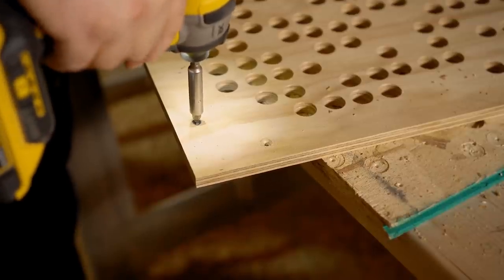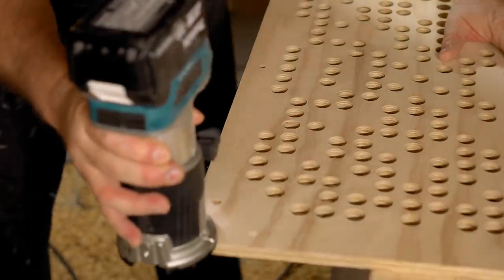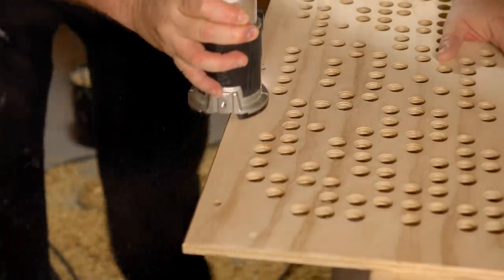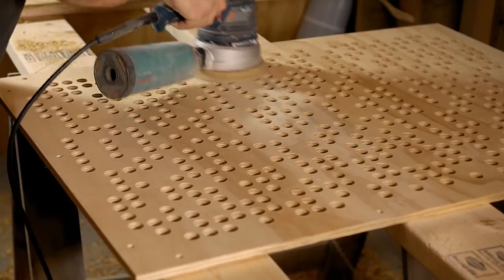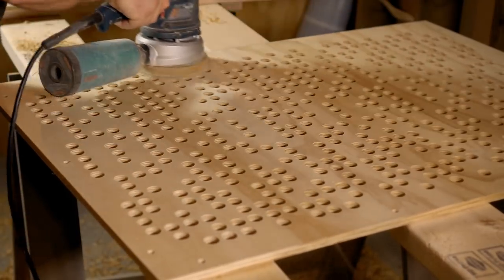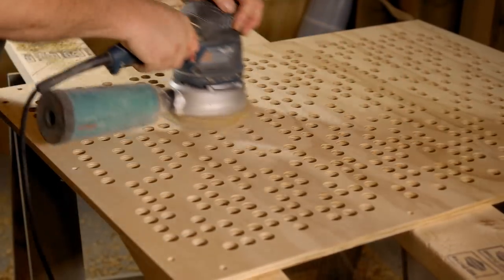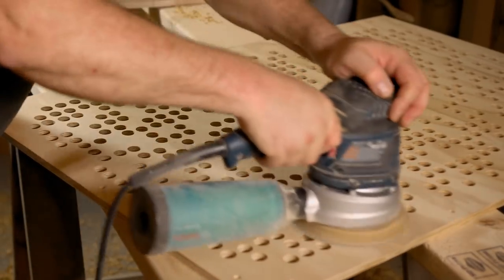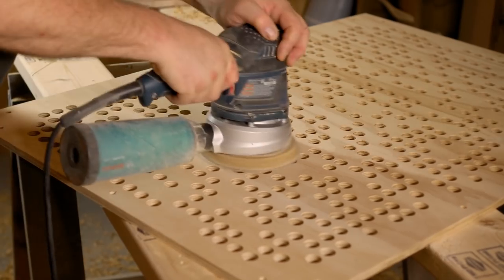With all of the panels fitting properly I can move on to beveling the edge. That's part of the look that I'm going for here. And then I'm going to sand the face to remove any discoloration and make it smoother.